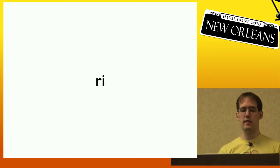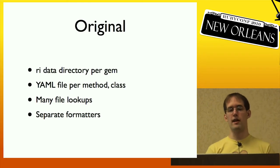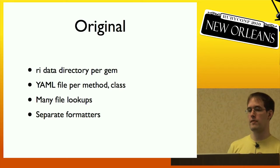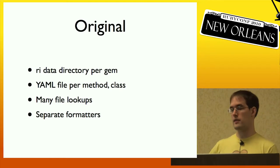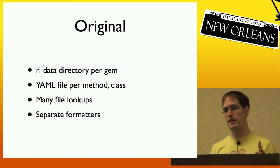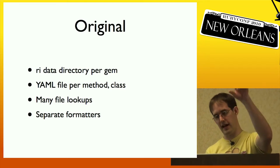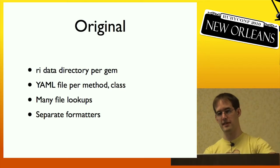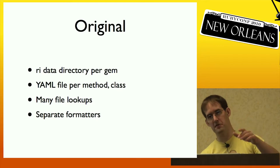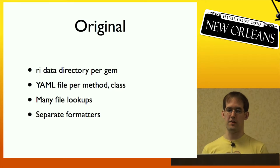Like the gem index, the RI software had a scaling problem. Originally there was just one RI data directory, and then with gems you added an RI data directory per gem. For every method and class there was a YAML file for that documentation. So if you wanted to look up a method with RI, it would go through all the data directories, stat all the files, and look up whether the method was there. And once ancestry lookup was added, it got worse — you'd have to look up the class, then look up the method again. You ended up doing a lot of file stats across the filesystem, which was really slow.